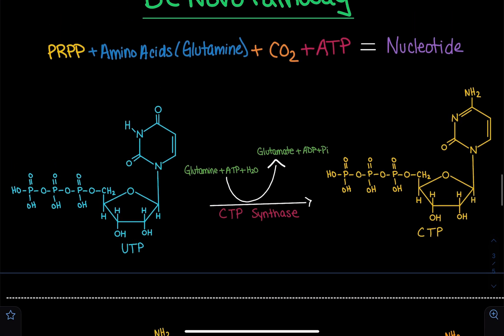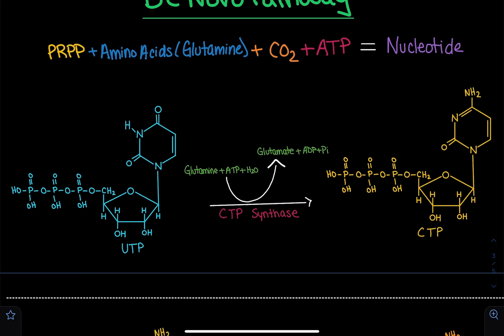Now we're going to use UTP to generate CTP. This is actually a very simple reaction compared to when we were generating UTP, which was a multi-step synthesis. Here, this is only a one-step synthesis for UTP to CTP.